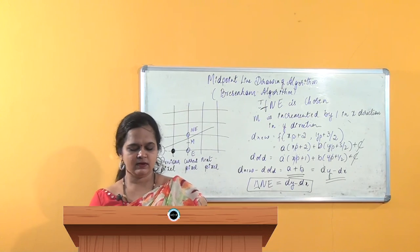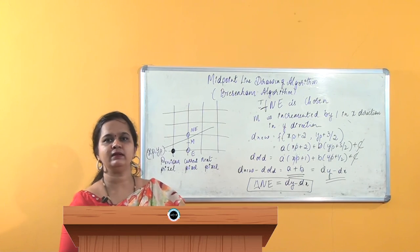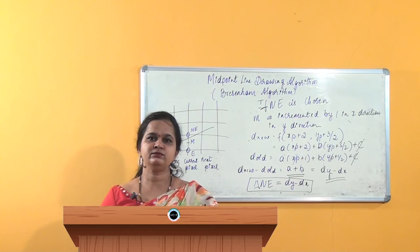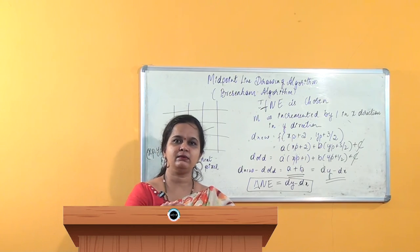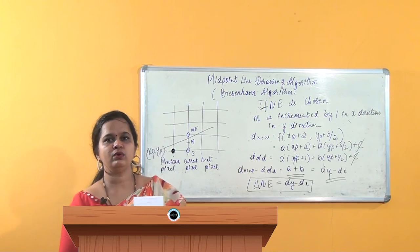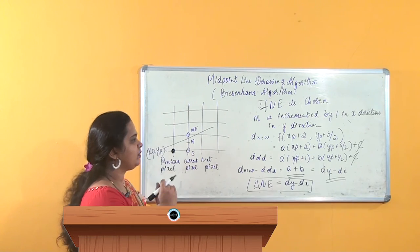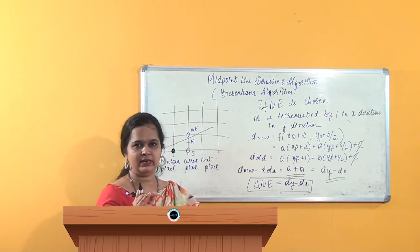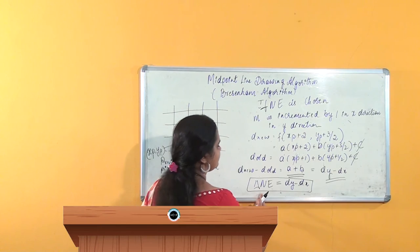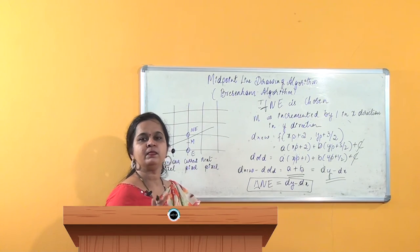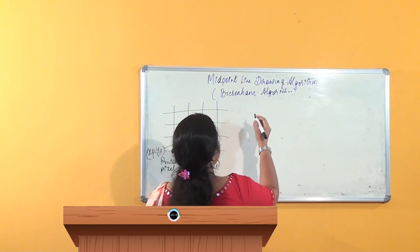Now we will start to write the algorithm. Before writing the algorithm, we need to work out some logical adjustments so that it can be directly written as an algorithm. We start from the first pixel (x0, y0) and move forward, keeping in mind what E, NE, delta_E, and delta_NE are.